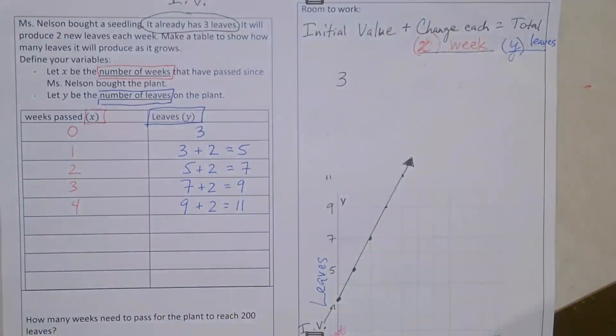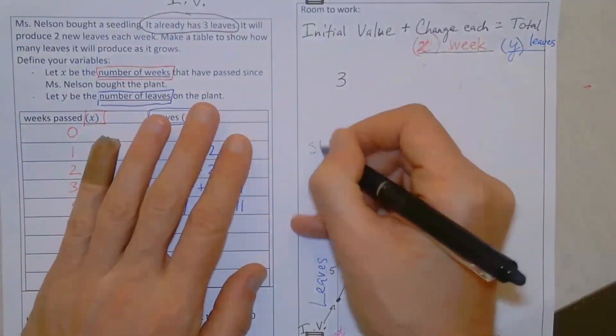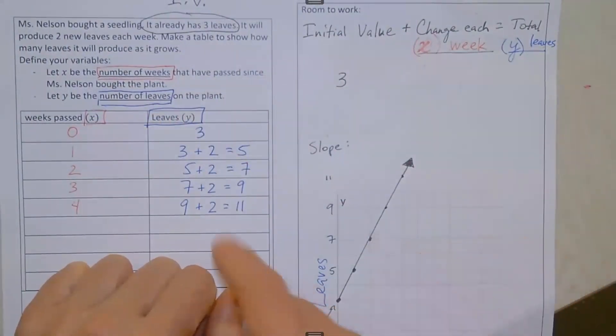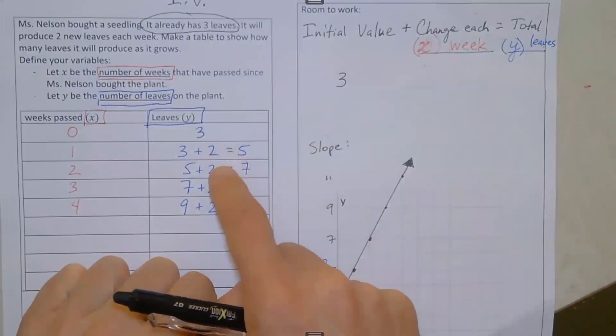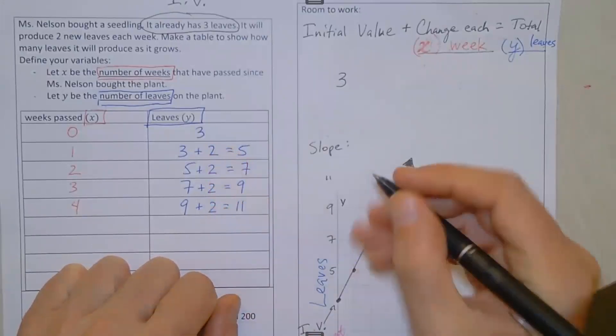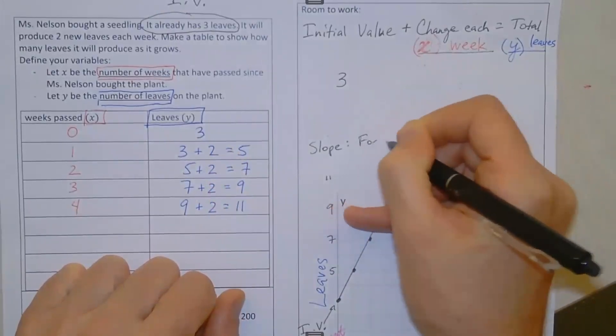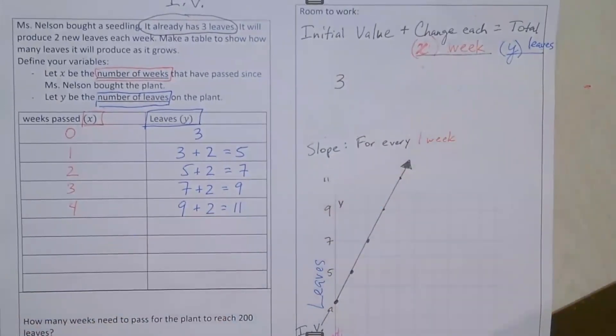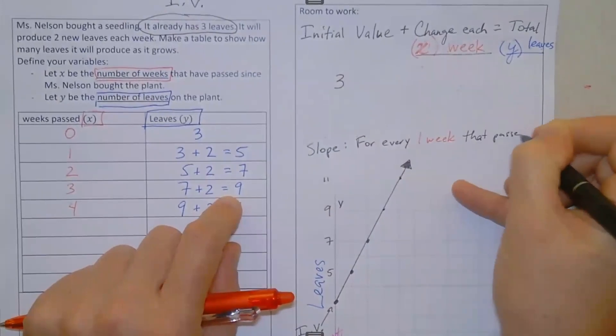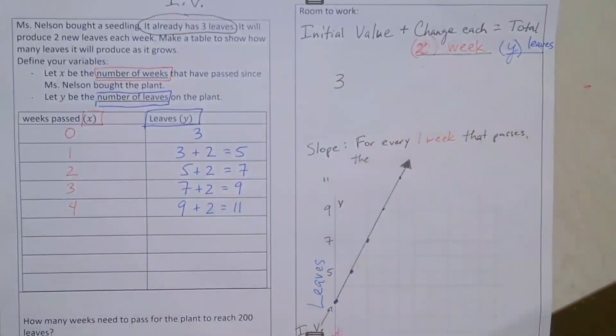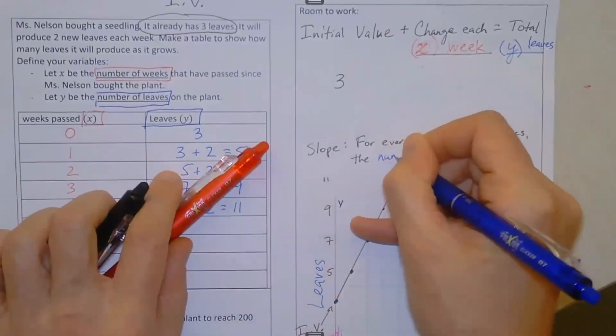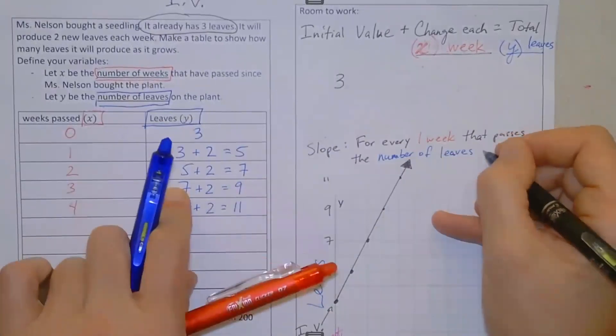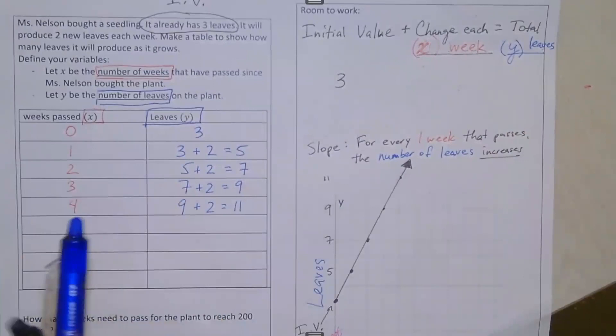I want to take a minute to let you know how we could figure out the slope here. So the slope is the number that we repeatedly add. We added two, then added two again, then added two again, then added two again. So our slope is for every one week that passes, the number of leaves increases by two.